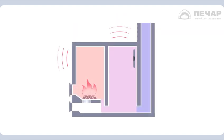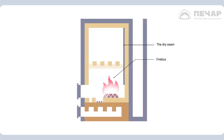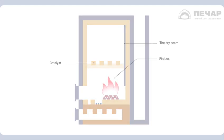A firebox is installed in the bell and they are combined through a dry seam. The firebox is bounded by walls and a fireclay brick catalyst.